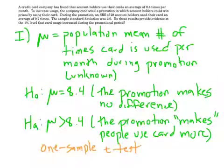Let's look at a concrete example. A credit card company found that account holders used their cards an average of 8.4 times per month. To increase usage, the company conducted a promotion in which account holders could win prizes by using their card. During the promotion, an SRS of 28 account holders used their card an average of 9.7 times. The sample standard deviation was 2.6. Notice that's what makes it a t-test instead of a z-test. This 2.6 is an s, not a sigma. It's the standard deviation of the sample, not the population. Therefore, we use t.